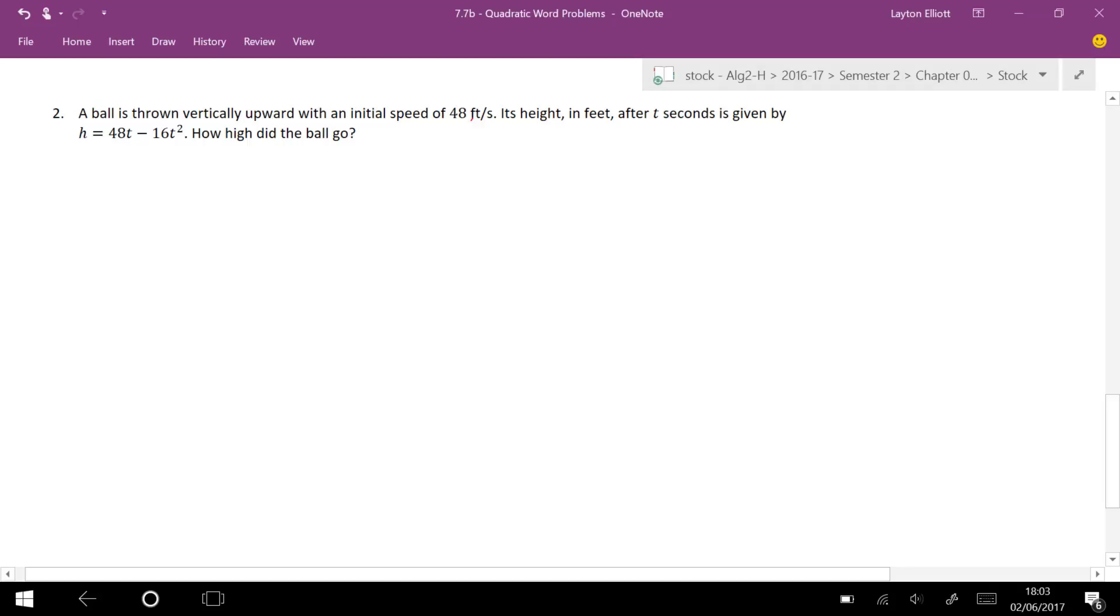Ball is thrown vertically upward. That means that it has initial speed of 48 feet per second. Its height in feet is given by h equals this. I'm going to rewrite that as h(t) equals 48t minus 16t squared. I'm actually going to make an effort to graph this by hand just so I can get a visual of what this looks like.